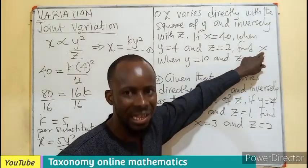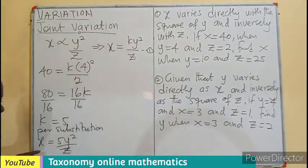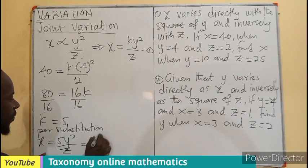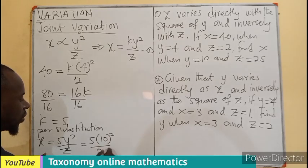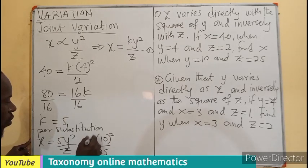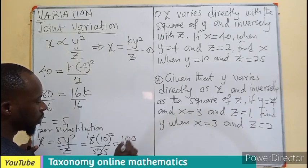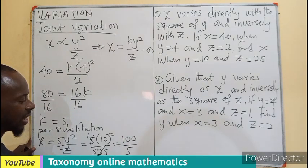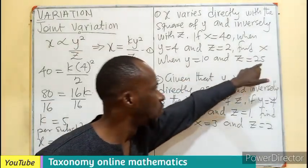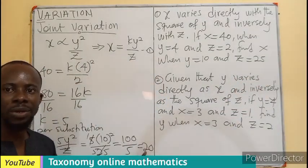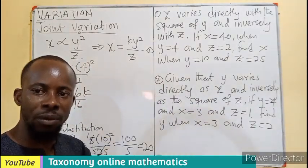Now our task is to find X when Y is 10 and Z is 25. So here, I will substitute: 5 times Y, which is 10 squared, divided by Z, which will be 25. This will give us 100 in the case of 10 squared. That gives us 20. So when Y is 10 and Z is 25, the value of X will become 20. You can see how we are solving the joint variation. We have no difference from what we have before.